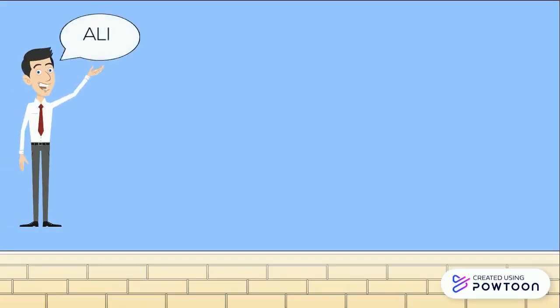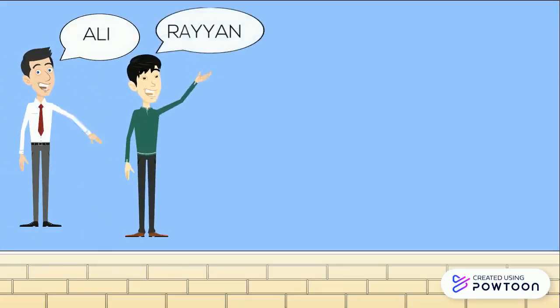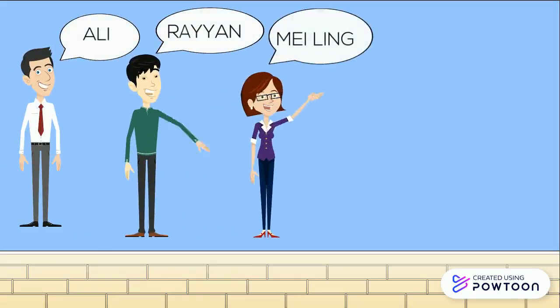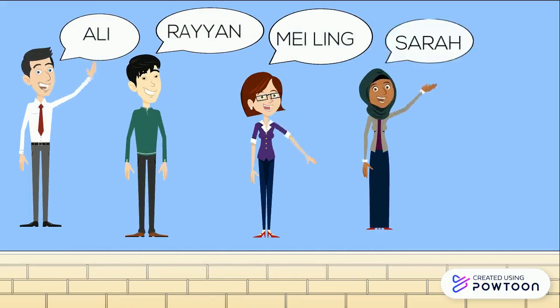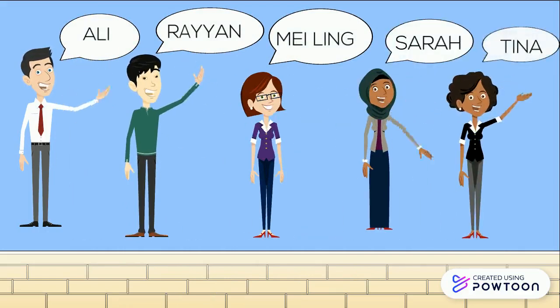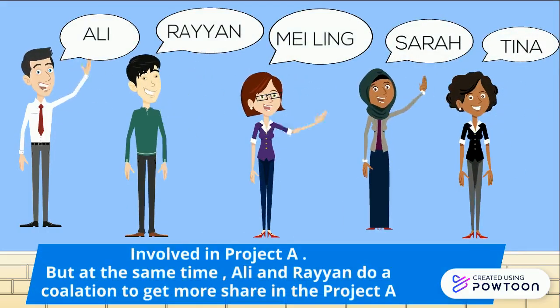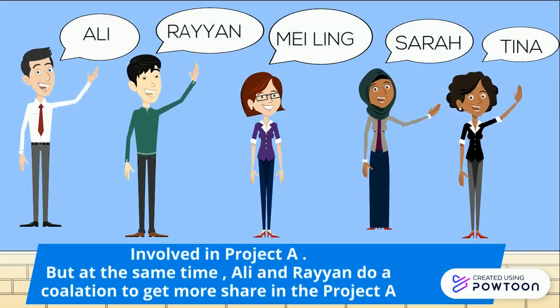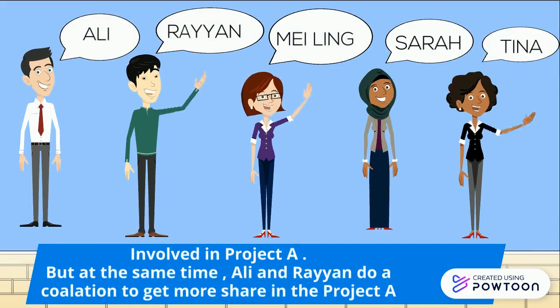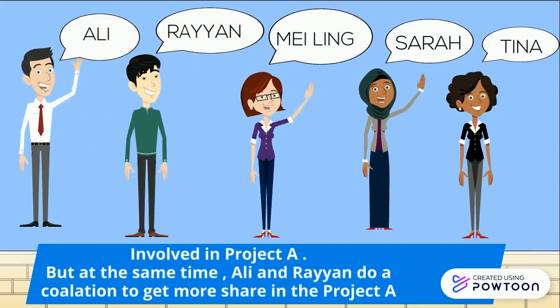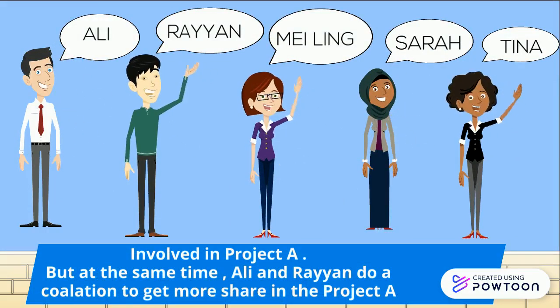For example, Ali, Ryan, Meleng, Sarah, and Tina are involved in project A. At the same time, Ali and Ryan form a coalition to get more share in project A.